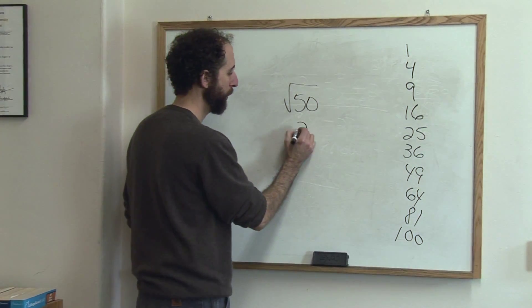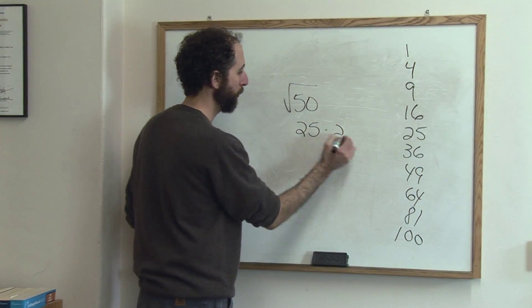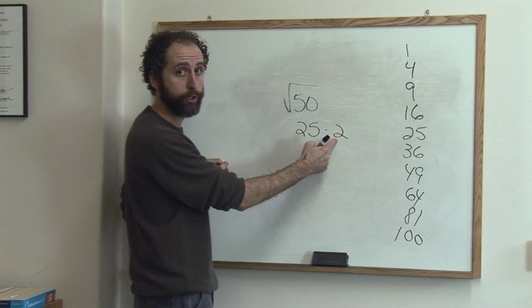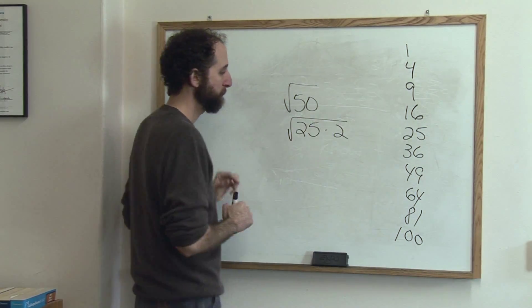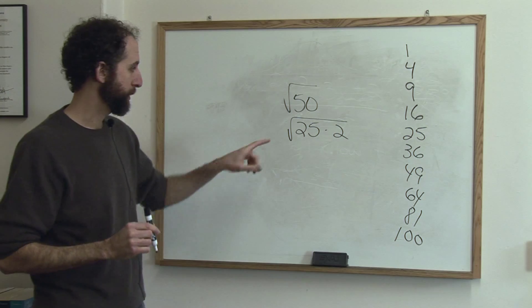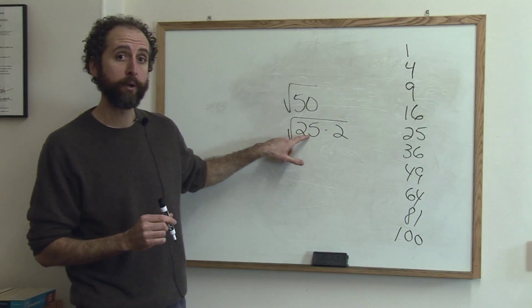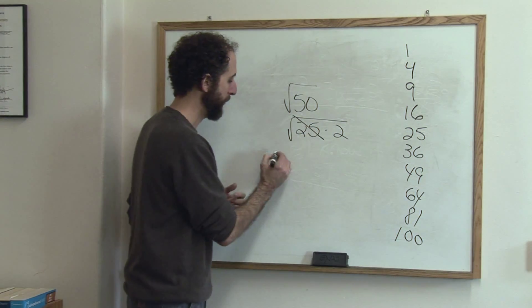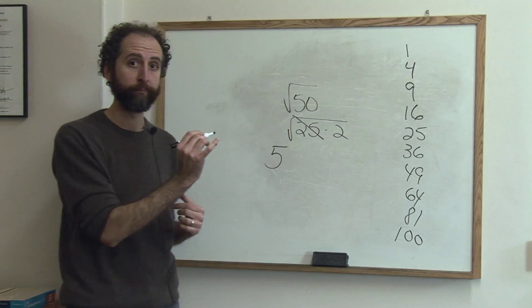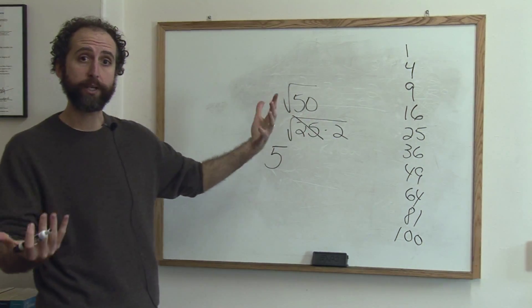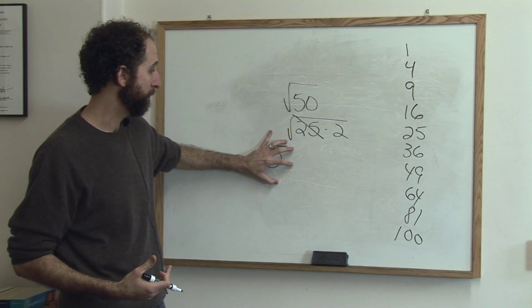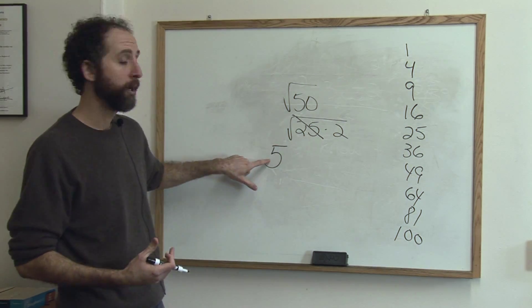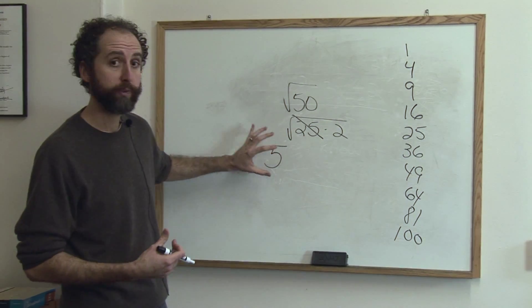So we rewrite 50 as 25 times 2, because 50 divided by 25 is 2. Now, the reason we wanted that is because the square root of 25 is actually 5. That comes out of the square root sign. The square root of 25 simplifies to, or is equivalent to, 5. So that comes out of the square root and goes on its own. It's now just a number, it's an integer.